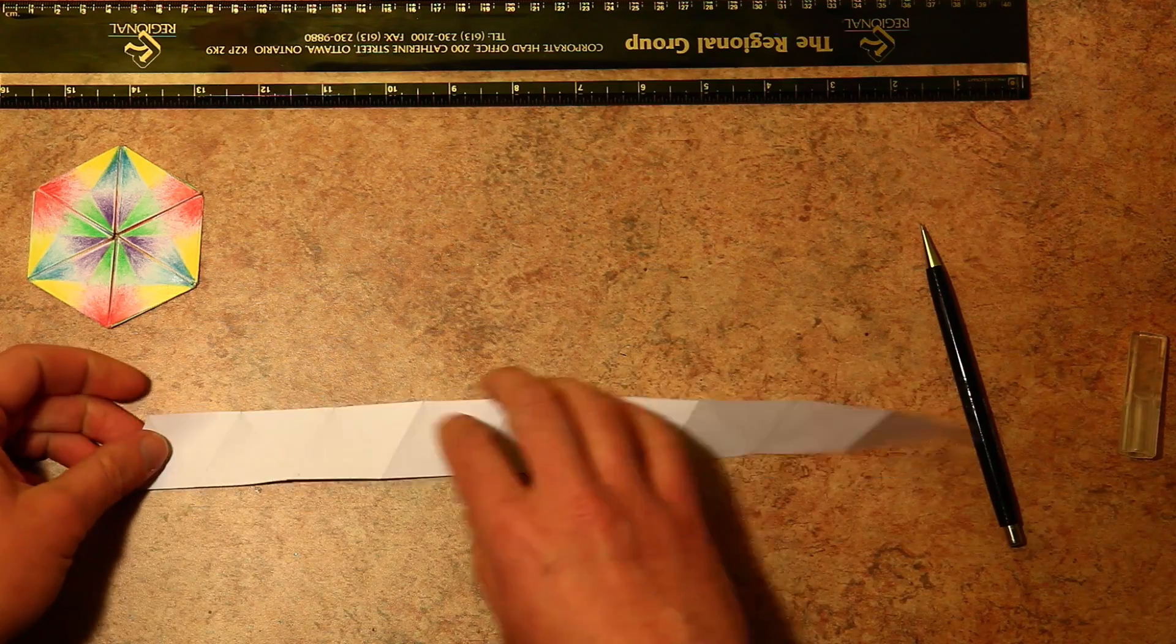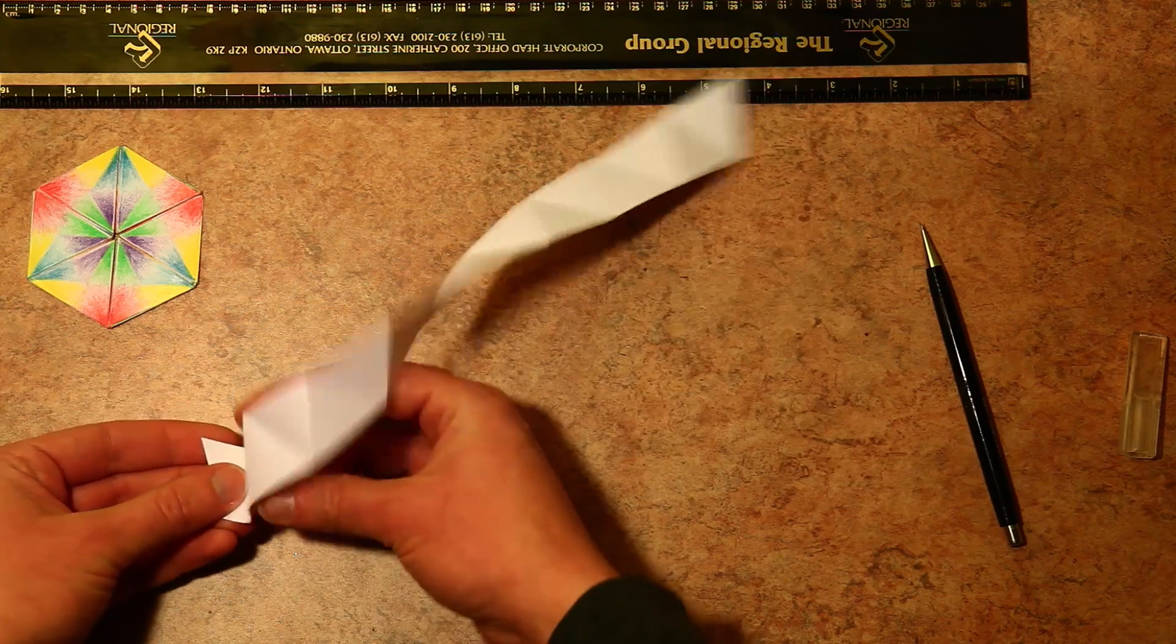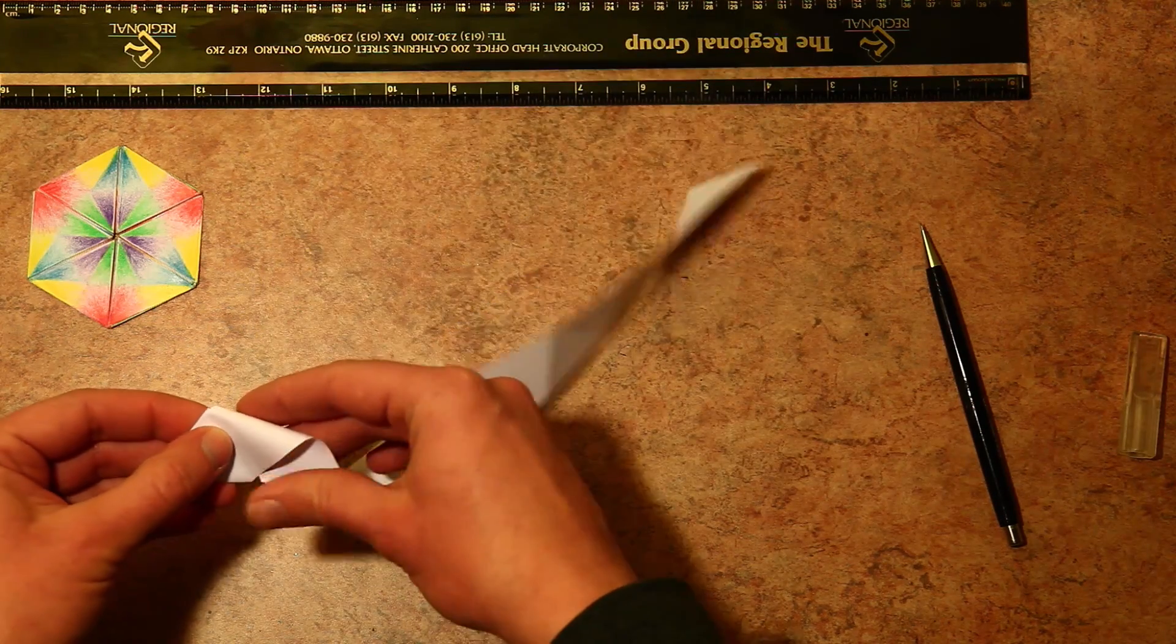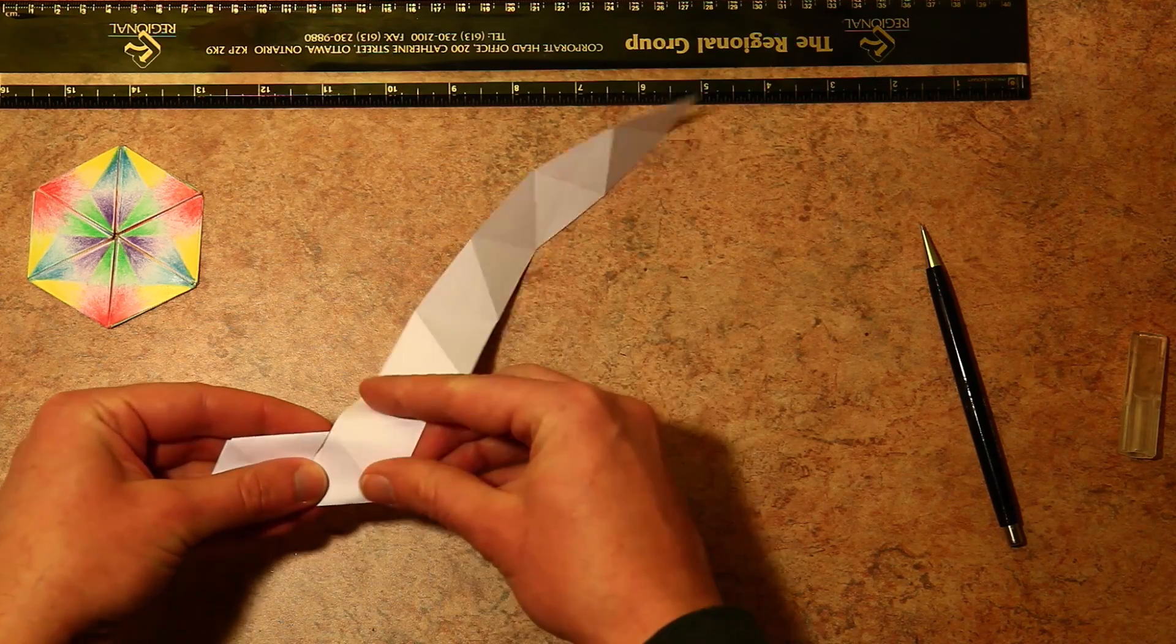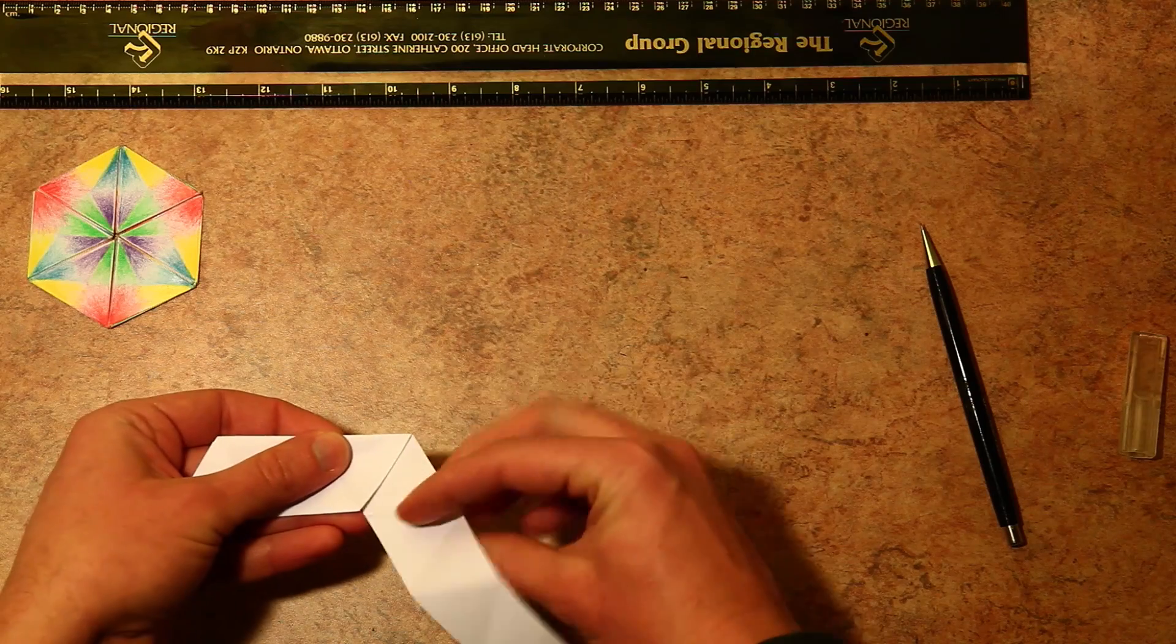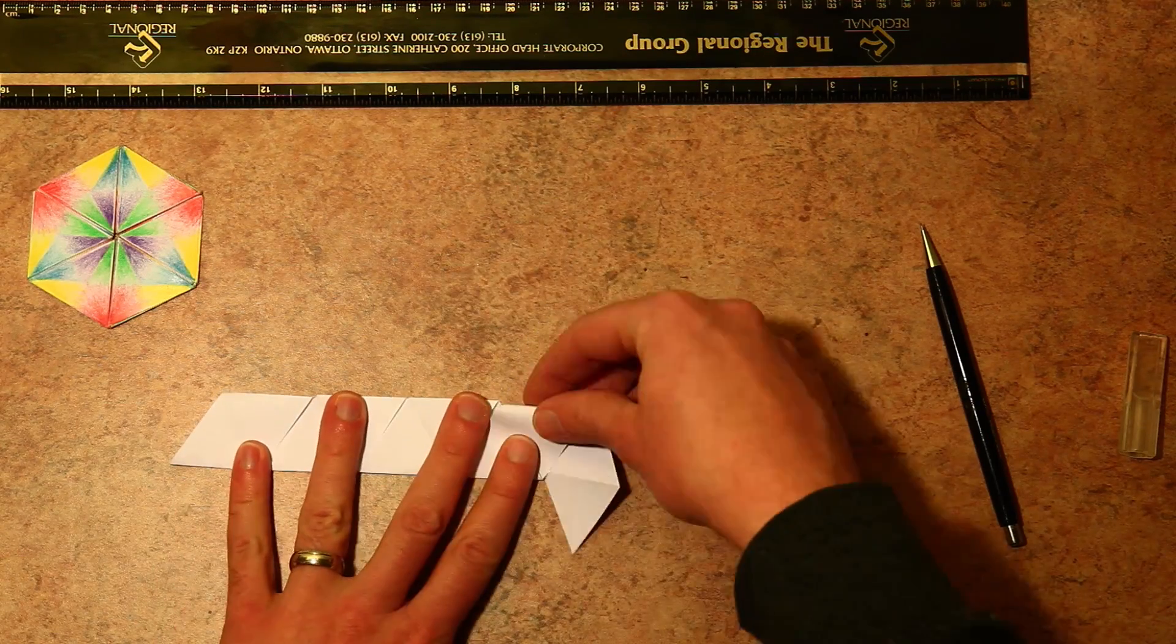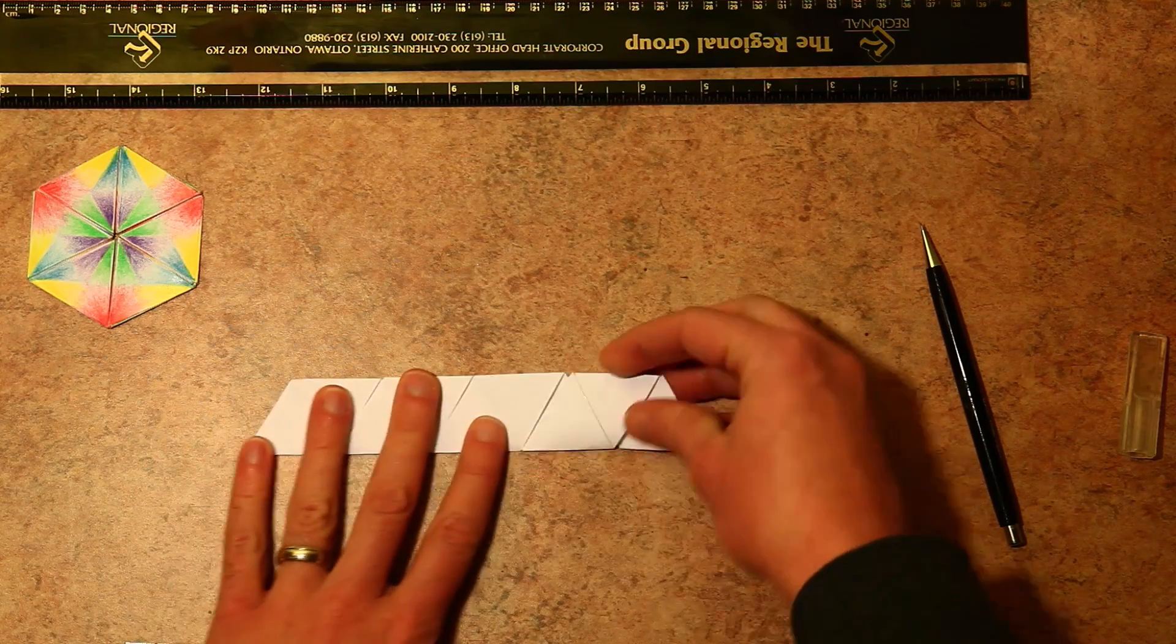Now what we need to do here is before we fold it into a hexaflexagon, we have to kind of fold it in a somewhat of a spiral pattern. And once you fold it in a spiral pattern, you should be left with nine doubled up triangles.